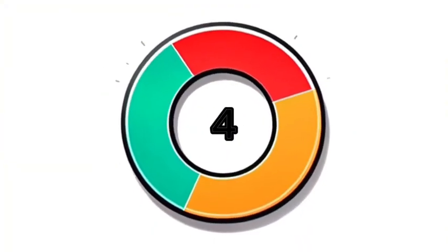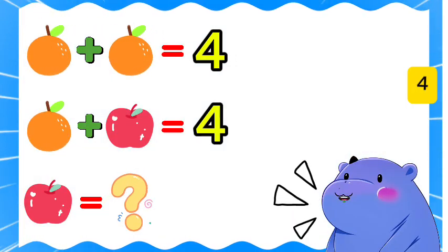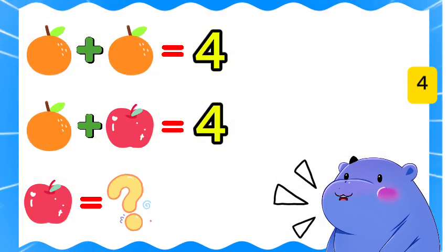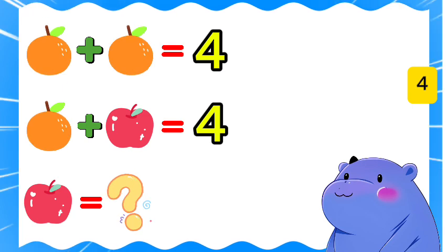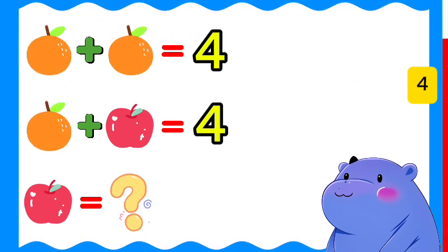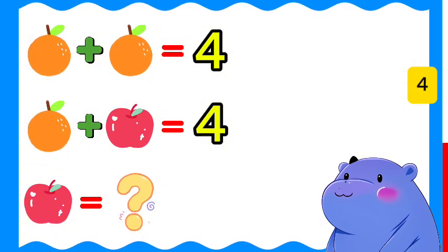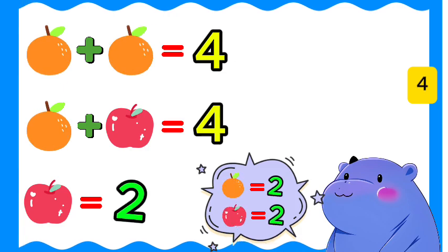Group 3. Orange plus orange equals 4. Orange plus apple equals 4. Apple equals? Apple equals 2.